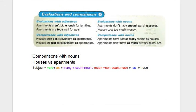What I would like to do now is show you how to make comparisons with nouns. When we talk about nouns in the context of comparing houses and apartments, we can think of things like rooms, privacy, bedrooms, bathrooms, kitchens — anything that has to do with what's inside or outside of a house. Those are nouns.